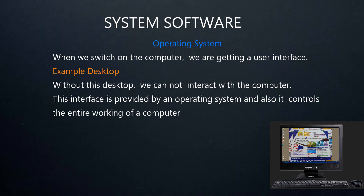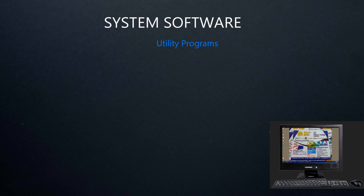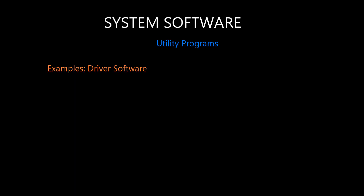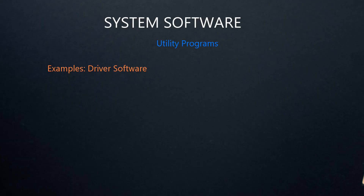That is, the operating system provides an interface and controls the entire working of a computer. Now, we are going to study examples of utility programs: driver software, system maintenance software, etc.